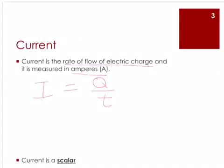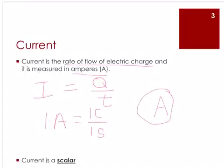One ampere is the electric current produced when one coulomb of charge passes through a point in a conductor in one second. An instrument called the ammeter is used to measure the strength of an electric current in an electric circuit. The ammeter should be connected in series to the rest of the circuit.